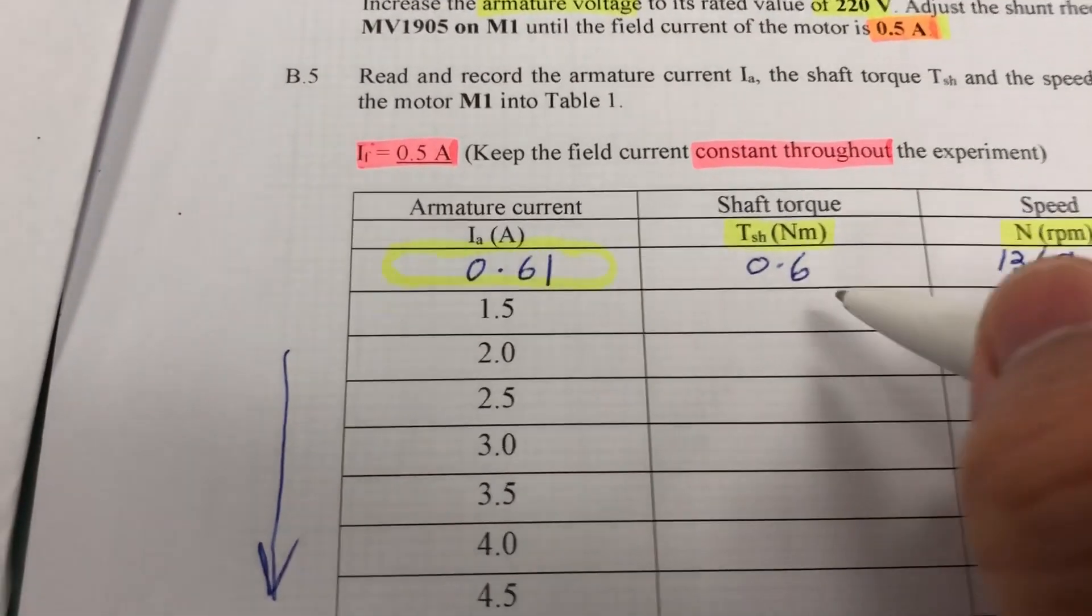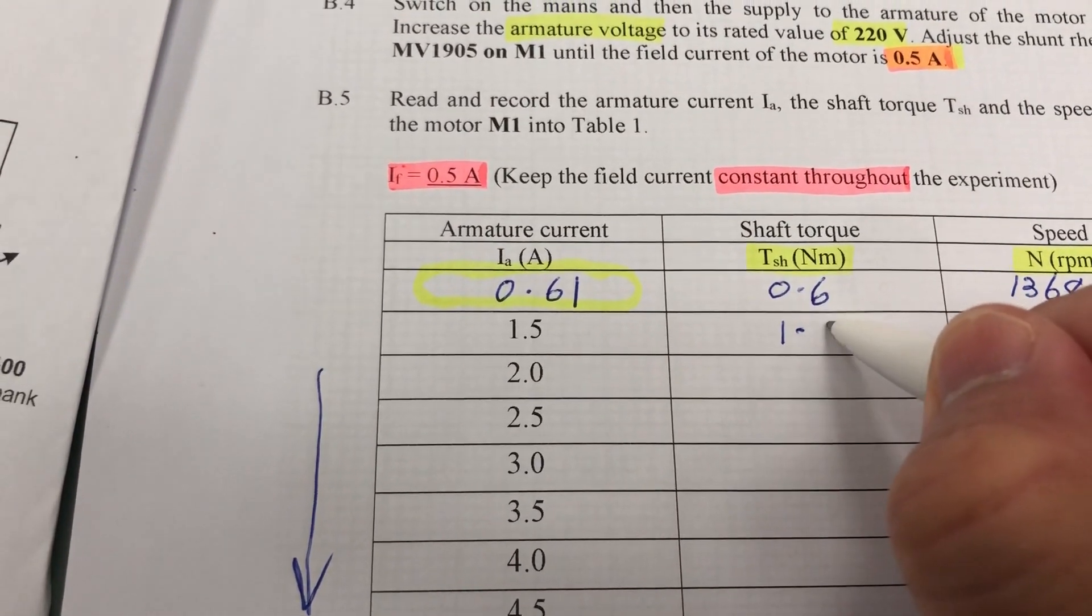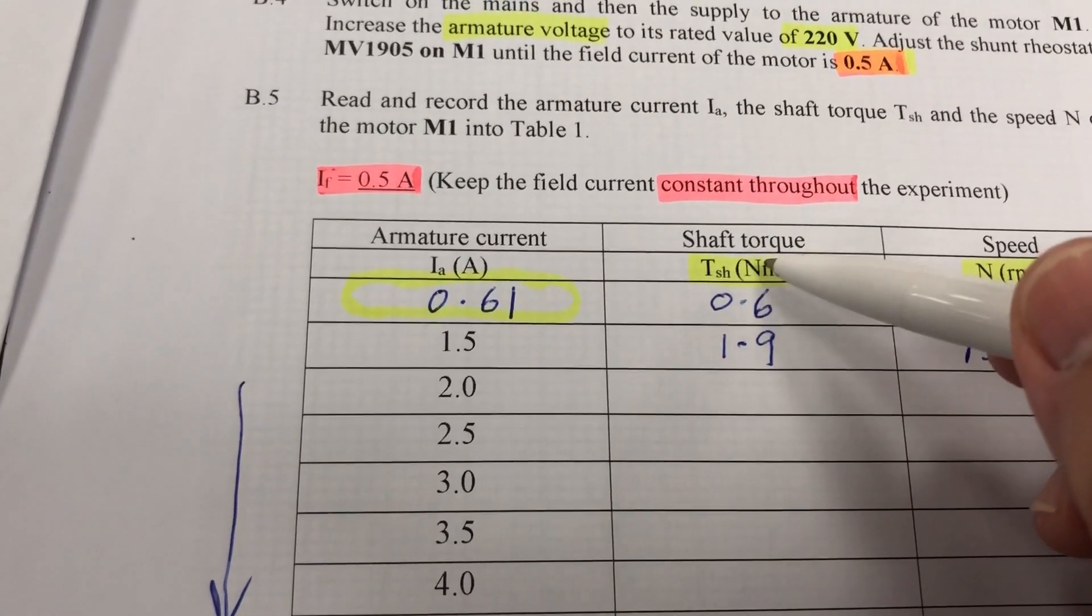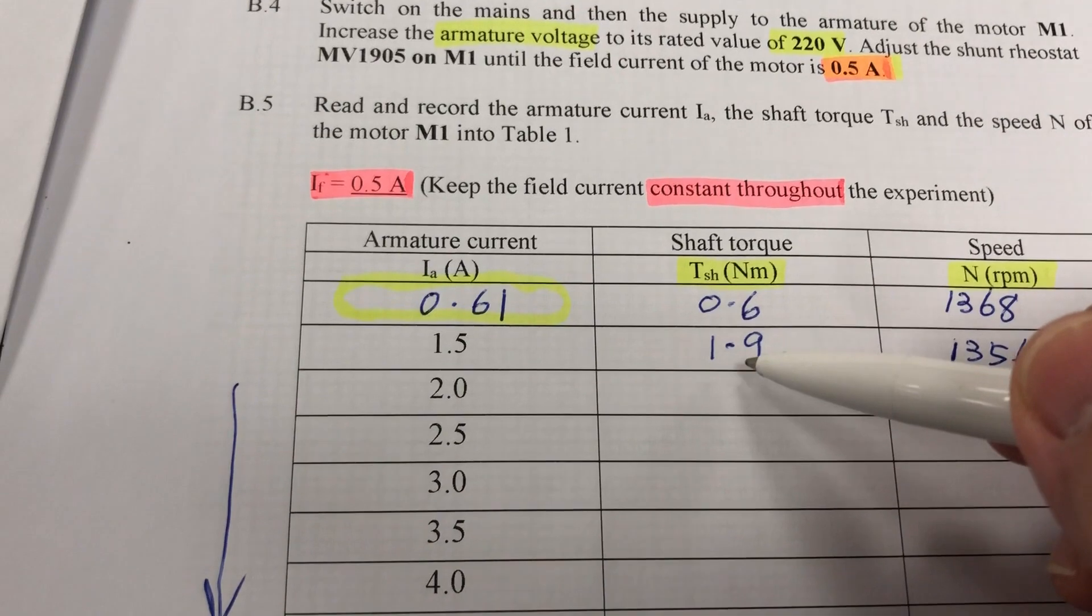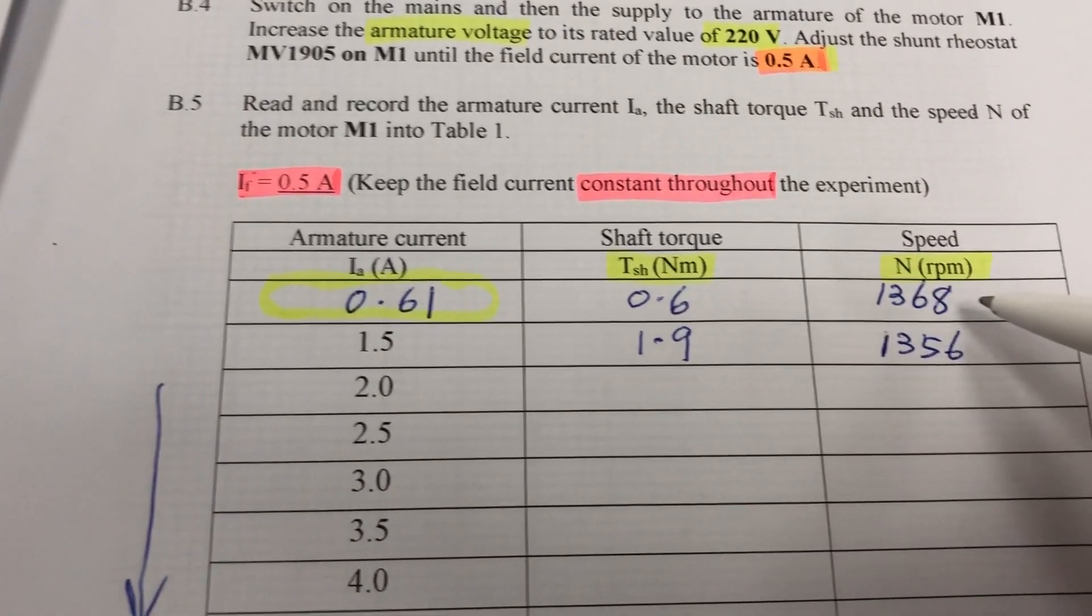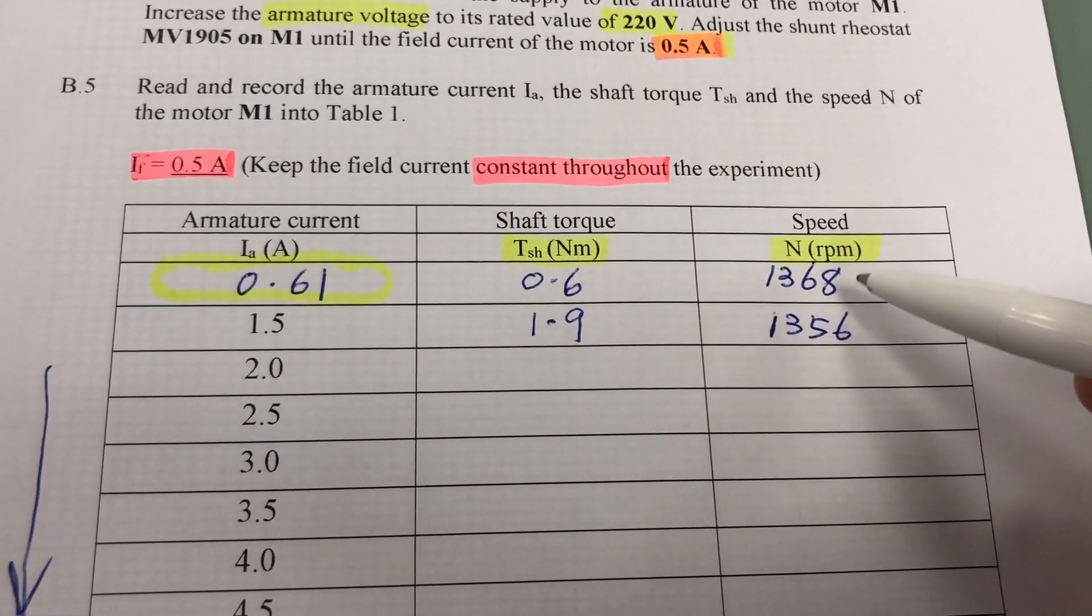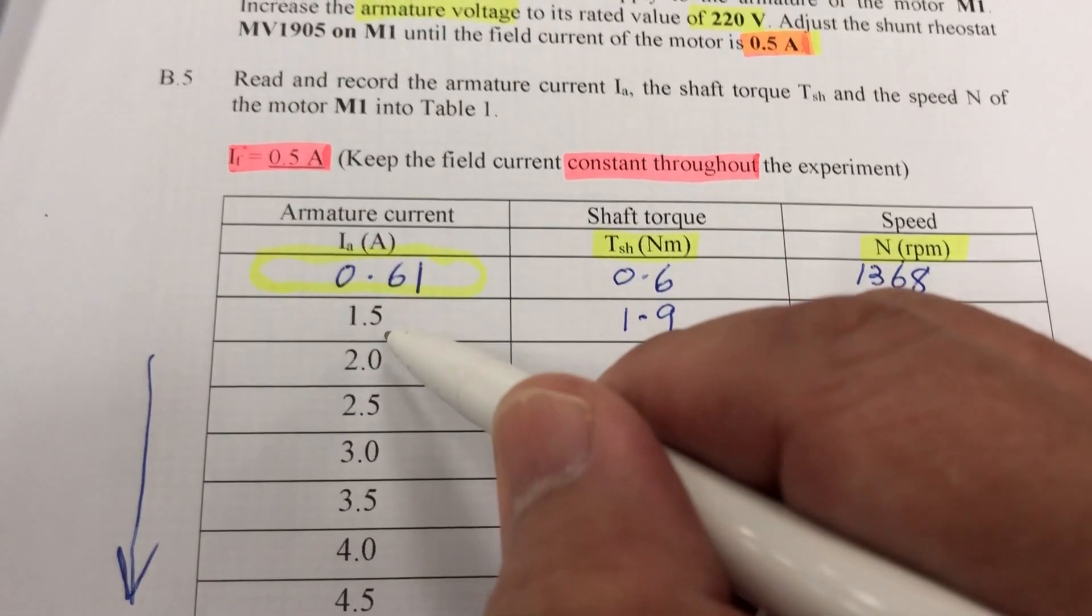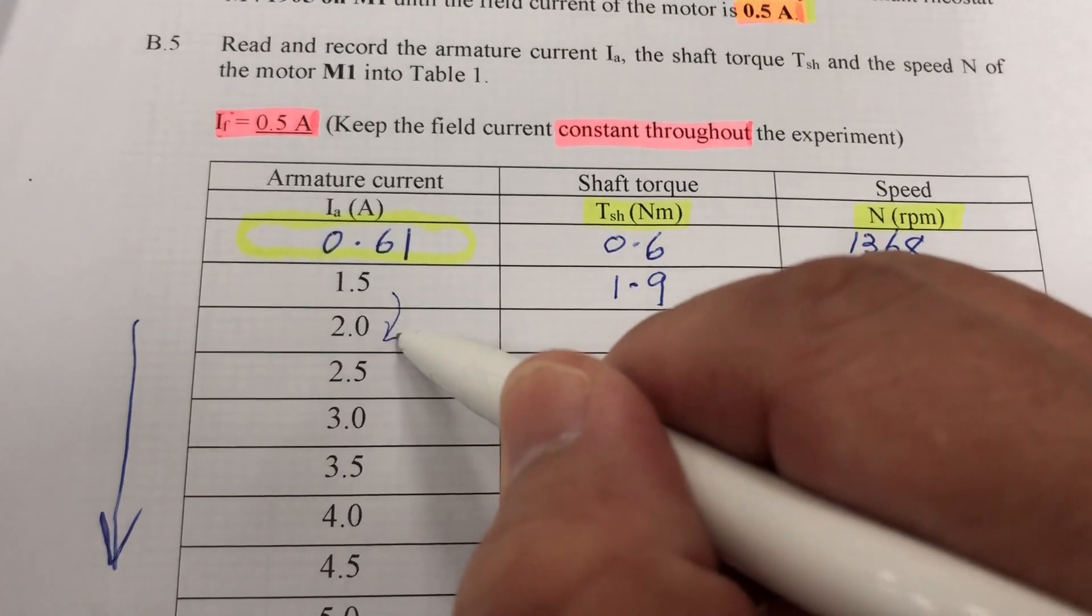1.9 Newton meter so you can see the torque has increased. Why? Because the load has increased so the torque has increased and the speed has dropped due to the increased load slightly while the armature current goes up. So our next reading is 2 ampere.